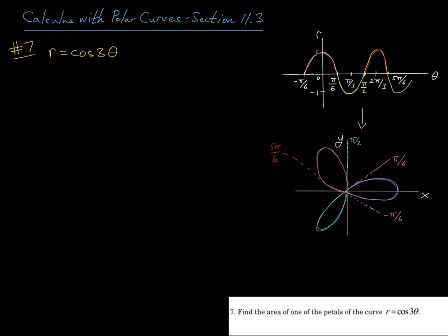And then from pi over 6 to pi over 2, r is negative. So as we rotate from pi over 6 to pi over 2, our graph will be down here in quadrant 3, so we're going to trace out this petal.